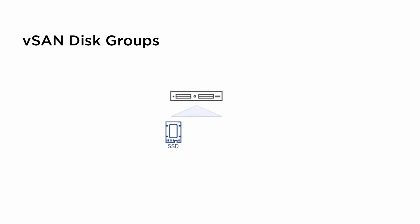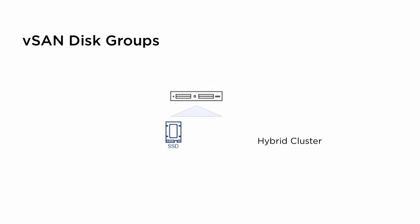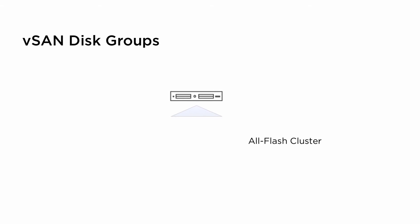Each host that contributes storage to a vSAN cluster must have at least one disk group. Each disk group has a flash device for cache and either flash or magnetic disks for capacity. Each disk group in a hybrid cluster has one flash device for cache and one or more magnetic disks for capacity. Each disk group in an all-flash cluster has one flash device for cache and one or more flash devices for capacity.